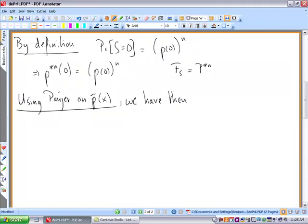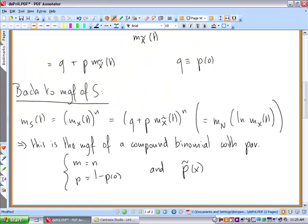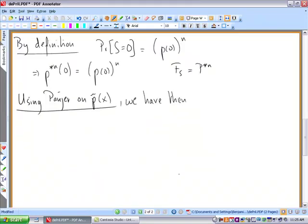using Panjer on the p X tilde, because here what we have for S is a compound binomial but with the p tilde.